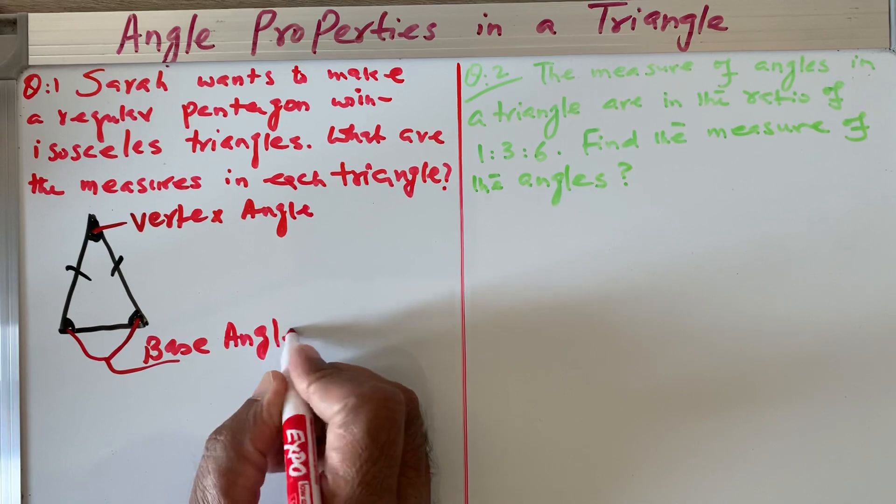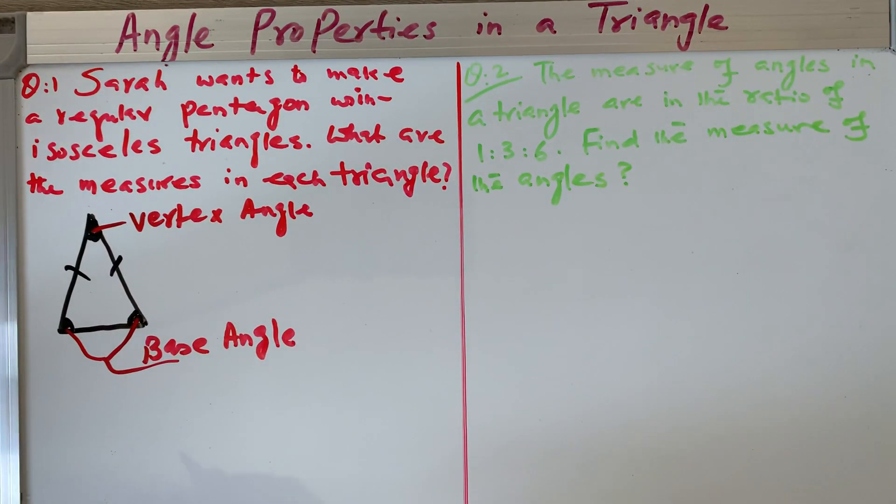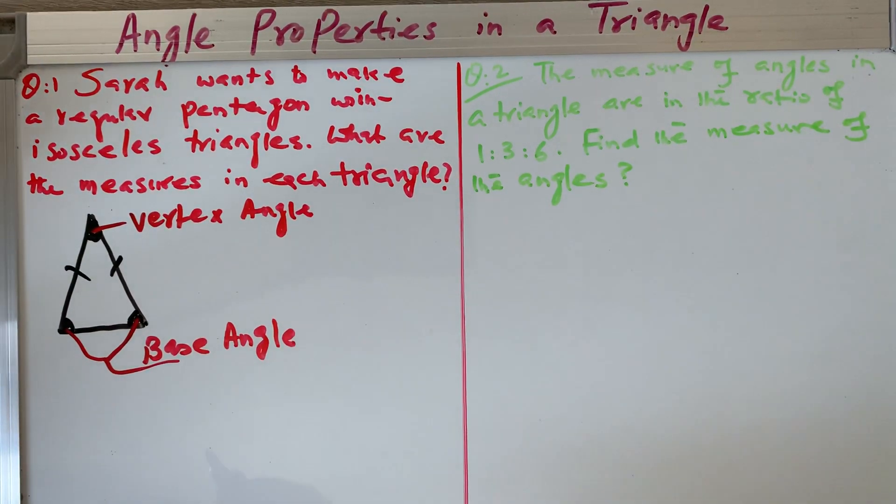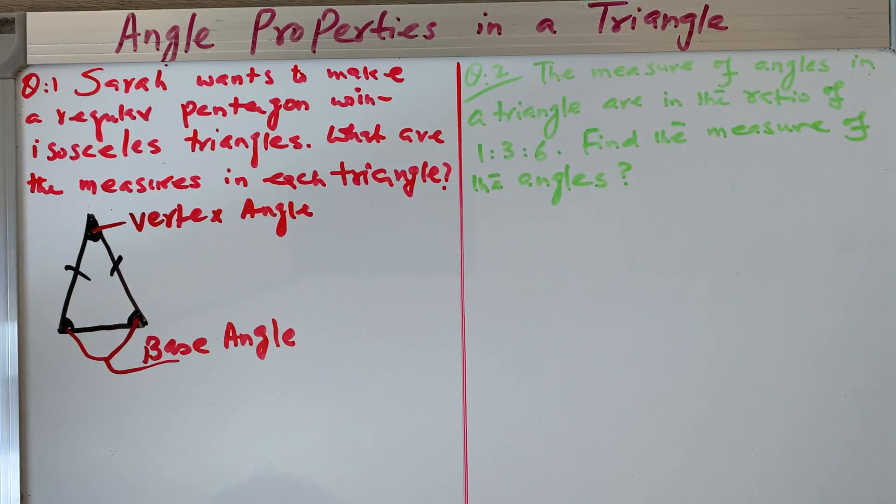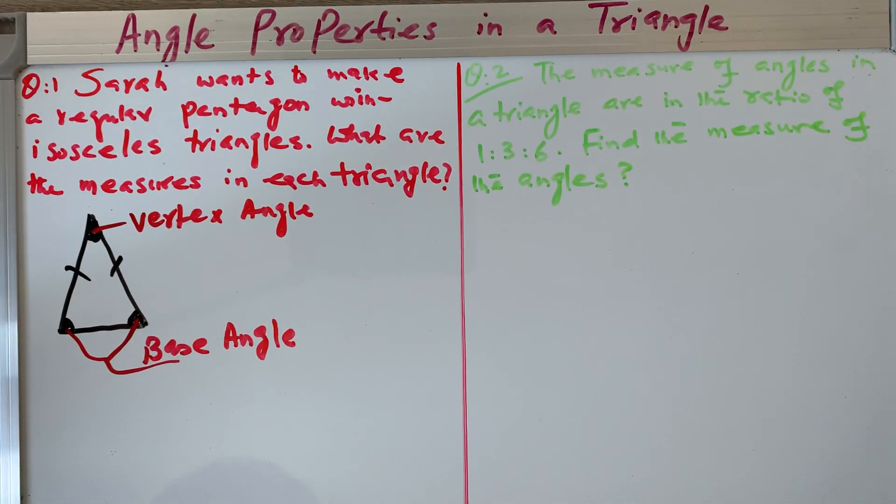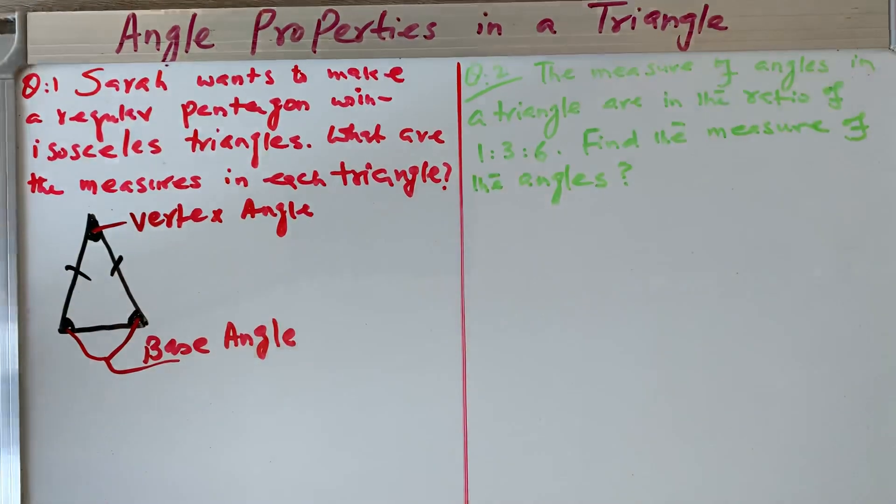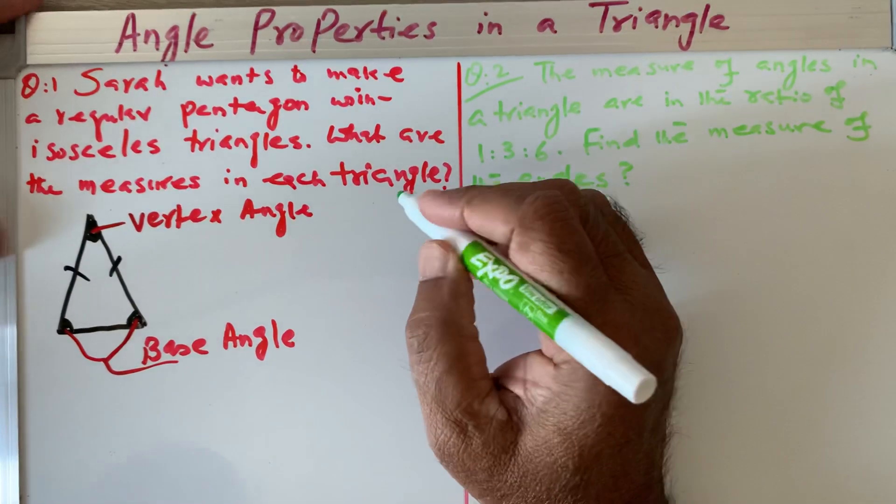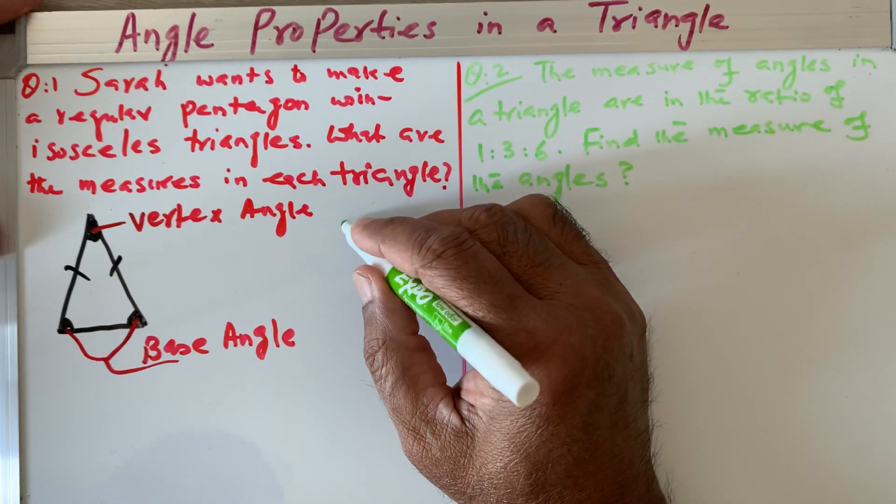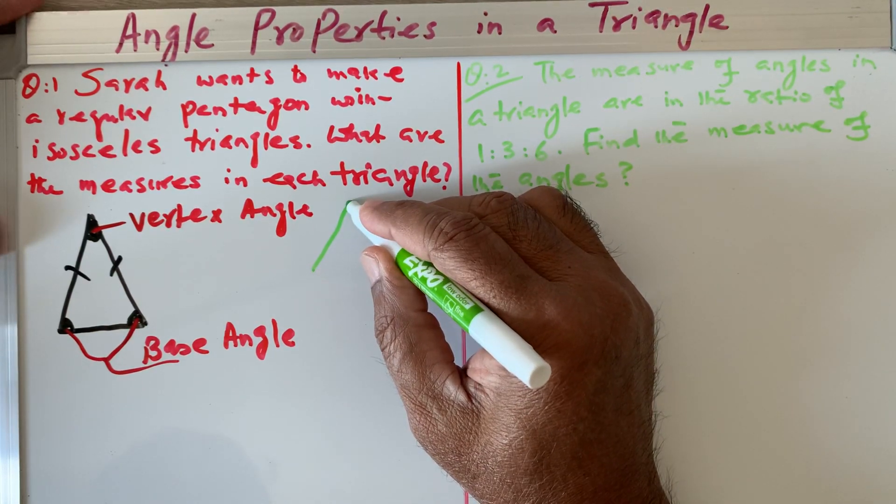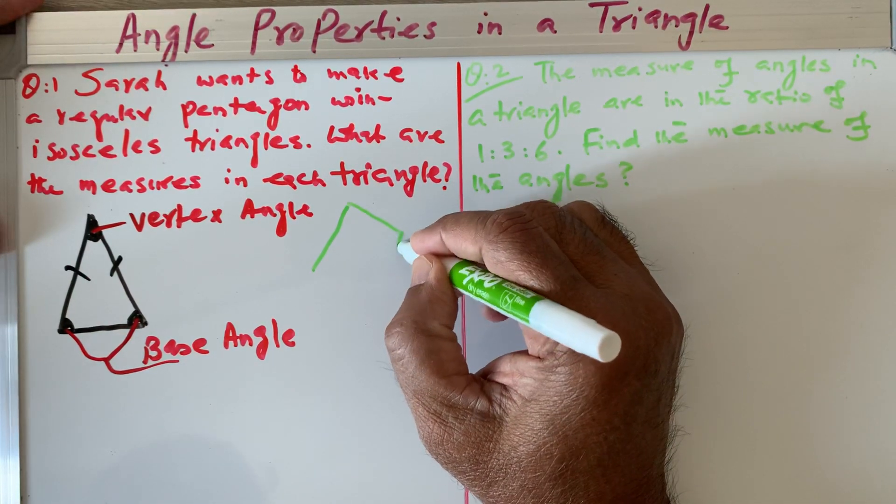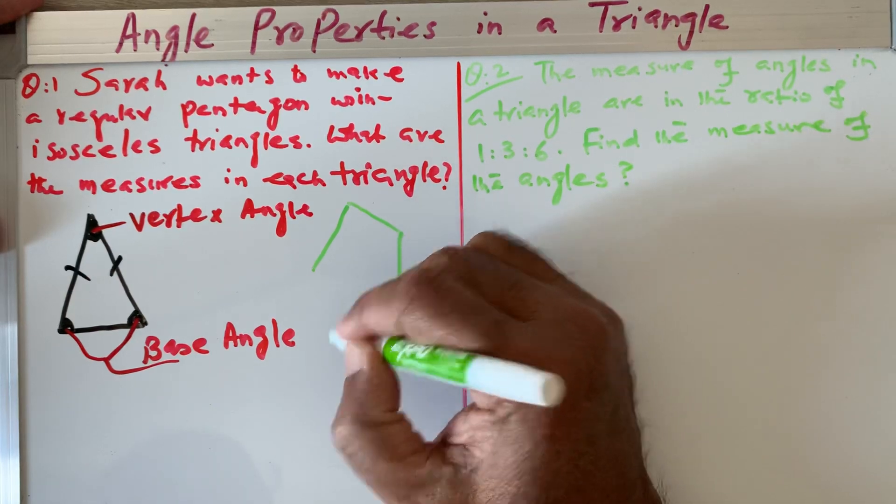We are dealing with Sarah wanting to make a regular pentagon. We learned in the last video that we can make a number of triangles in any pentagon. My pentagon will be like this: one, two, three, four, and five.